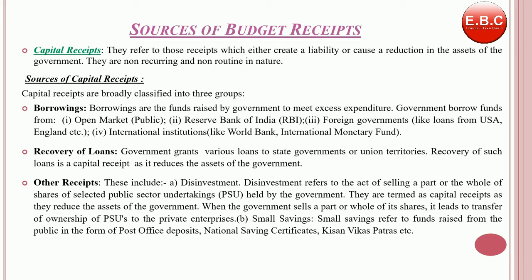The third source of capital receipts includes other receipts, which basically include disinvestment and small savings. Disinvestment refers to the act of selling a part or the full shares of selected public sector undertakings — they are termed capital assets as they reduce the assets of the government. Small savings refer to funds raised from the public in the form of post office deposits, national savings certificates, Kisan Vikas Patra, etc. They are treated as capital liabilities as they lead to an increase in the liability of the government.